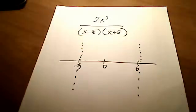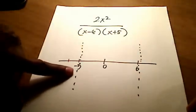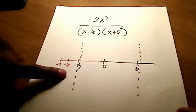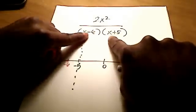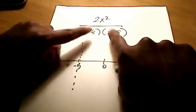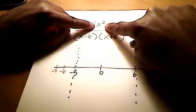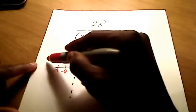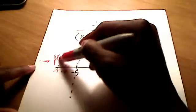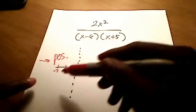If we approach negative 5 from the left side — coming from values like negative 6, negative 7, negative 8 — all those numbers are negative. So (negative minus 6) stays negative and (negative plus 5) stays negative. Two negatives in the denominator multiply to a positive, and the numerator is positive since it's squared. So everything coming from the left of negative 5 is positive, meaning the function heads to positive infinity.